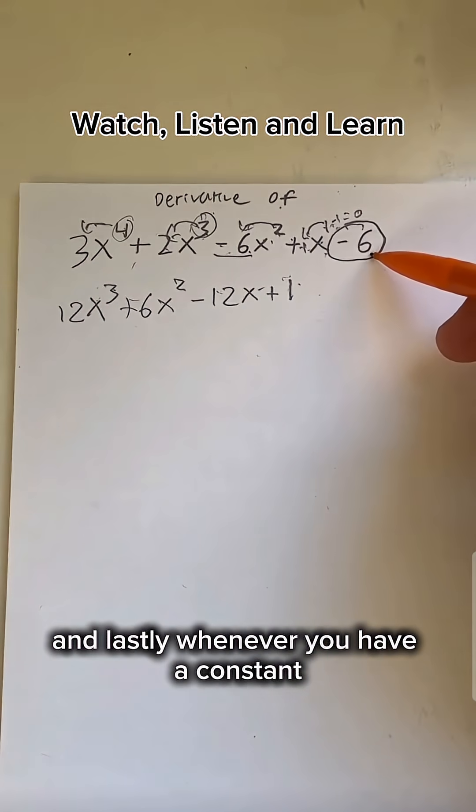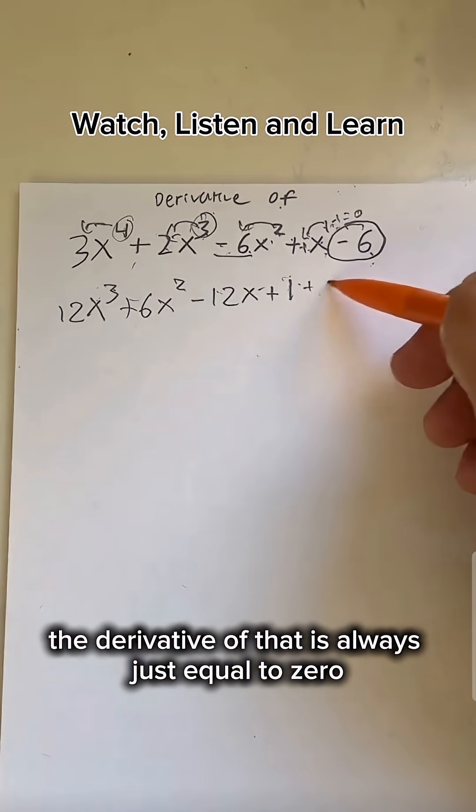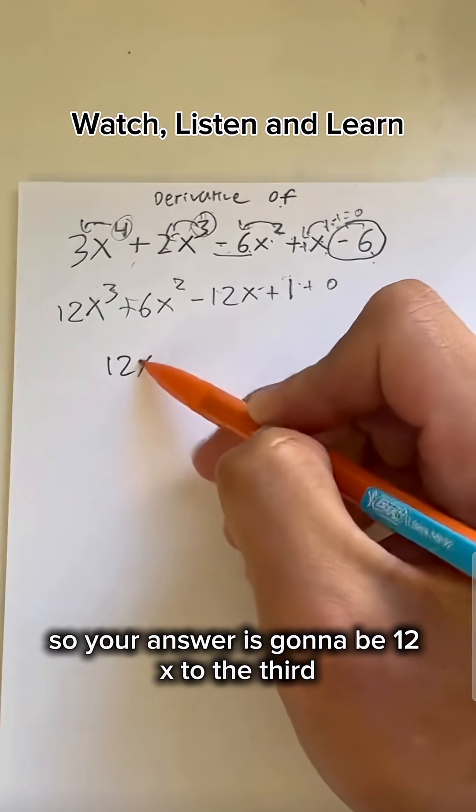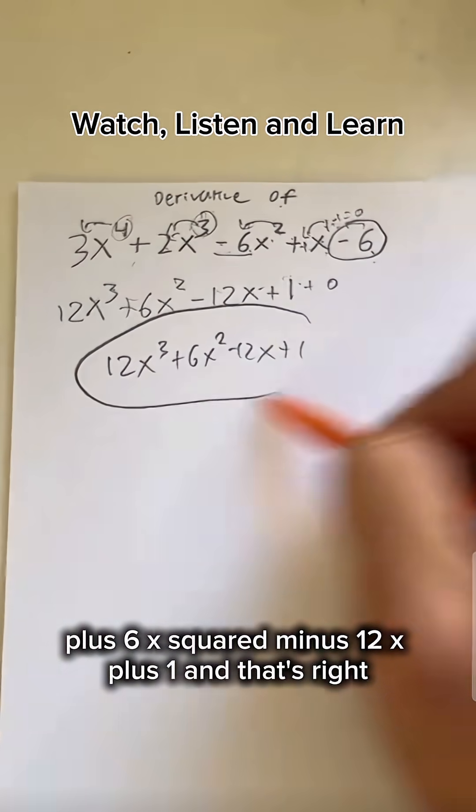And lastly, whenever you have a constant, or in this case, just a regular number, the derivative of that is always just equal to 0. So your answer is going to be 12x to the third plus 6x squared minus 12x plus 1, and that's right.